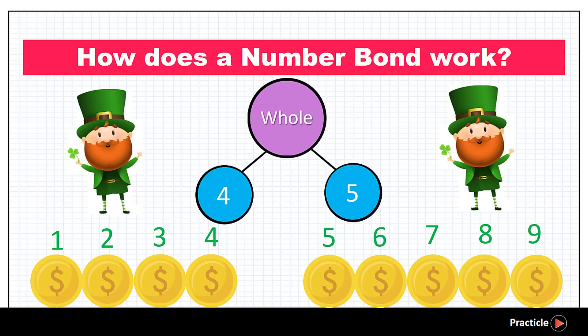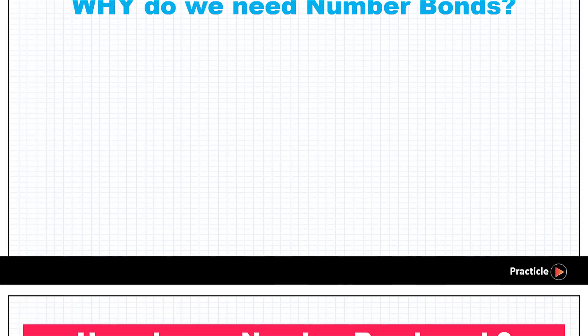Now that we have the number 9, do you know where it goes? It goes into the circle on the top. So now we know that when we have a part of 4 and a part of 5, we'll end up having a total of 9. Understand so far?